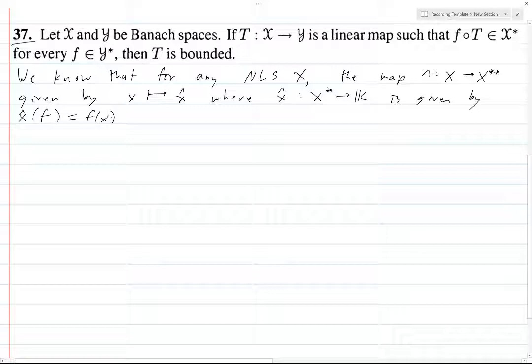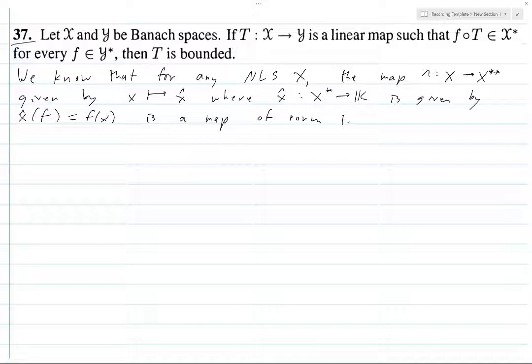Anyways, this map, the map hat, is a linear map of norm 1. It's clearly linear.